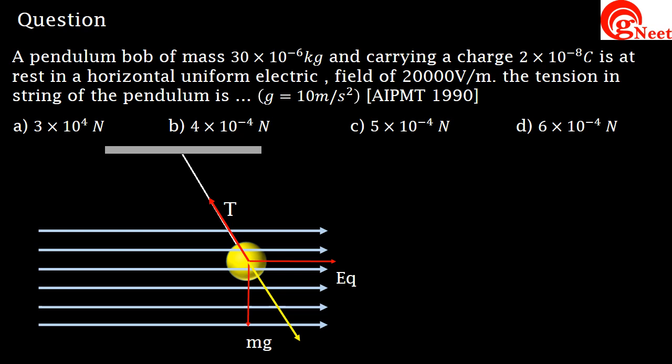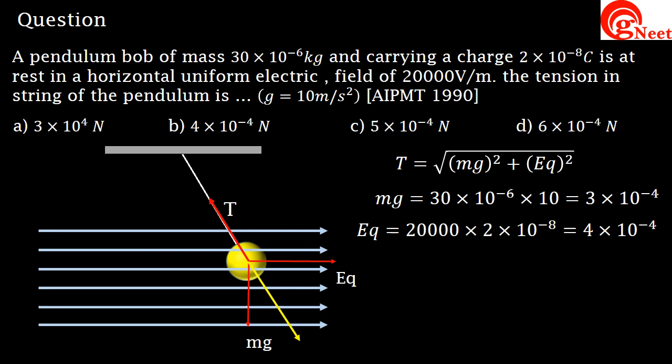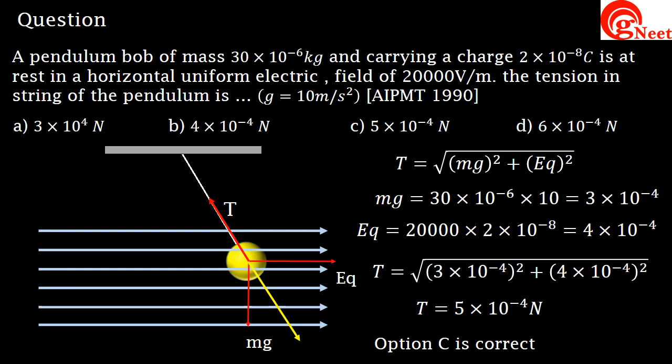we find that tension T equals the square root of (mg)² plus (Eq)². Substituting the values of m, g, E, and q into the equation and simplifying, we get T equals 5 × 10⁻⁴ newtons.